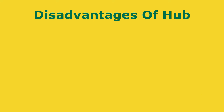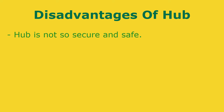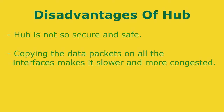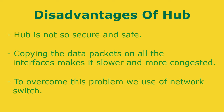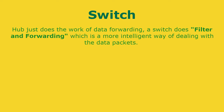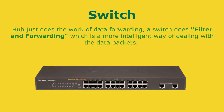A disadvantage of a hub is that, because of its working mechanism, a hub is not very secure and safe. Moreover, copying the data packets on all interfaces makes it slower and more congested. This led to the use of the network switch. A switch is more intelligent than a hub — while a hub just does data forwarding, a switch does filtering and forwarding, which is a more intelligent way of dealing with data packets.